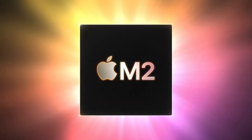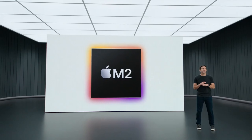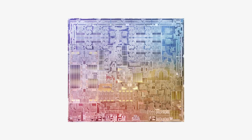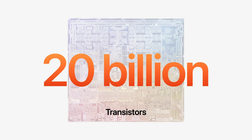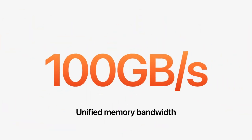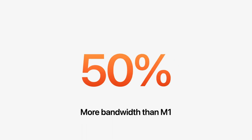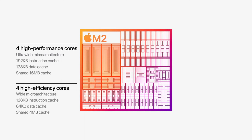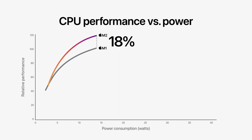The next-gen Apple Silicon is the M2. The chip has a slightly bigger die size. The M1 had 20 billion transistors — the M2 has 25% more. It has 100 gigabits per second of unified memory bandwidth, 50% more than M1, enabling up to 24 GB of unified memory, with 8 cores total. The M2 delivers 18% more performance at the same power as M1.